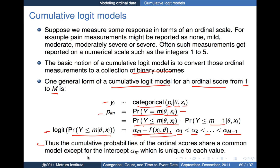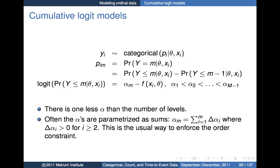Under this model, the cumulative probabilities for our ordinal scores share a common model — the function of covariates and parameters — except for the intercept, which is unique to each one of the score levels.